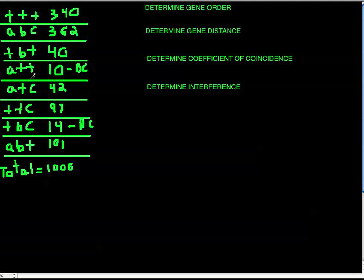Now we can use the double crossovers to find gene order. We're looking for which two genes in the set crossed over. We have uppercase B and uppercase C crossing over, leaving A intact. So A stays the same in the double crossover — the B and C do the swapping. This means A is going to be in the middle. Your actual gene order is B, A, C.